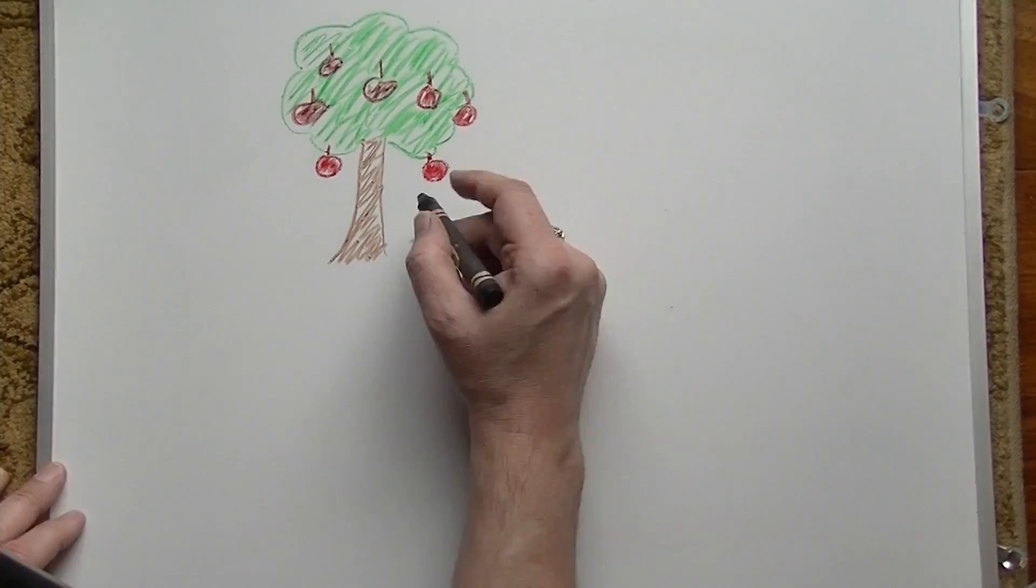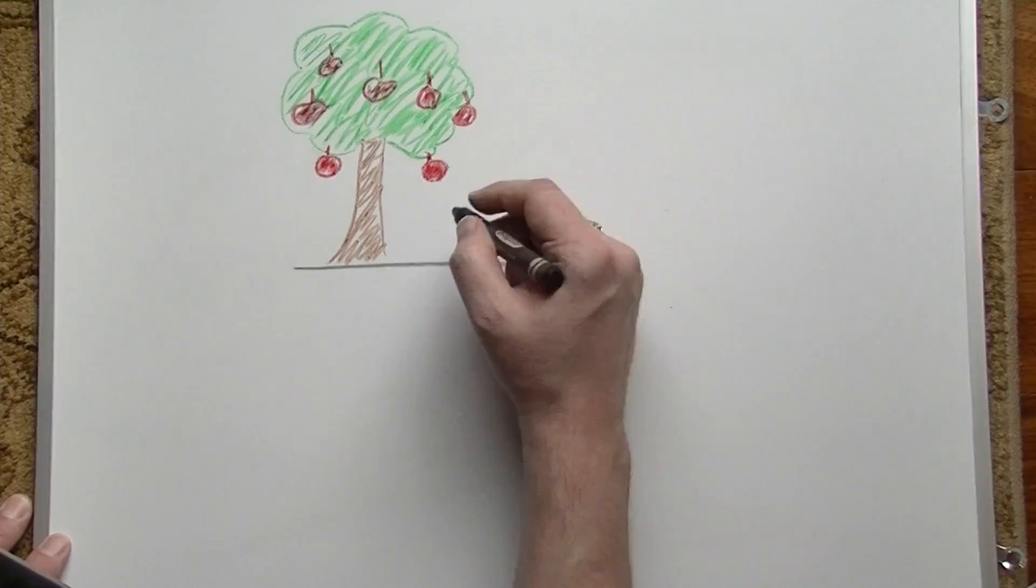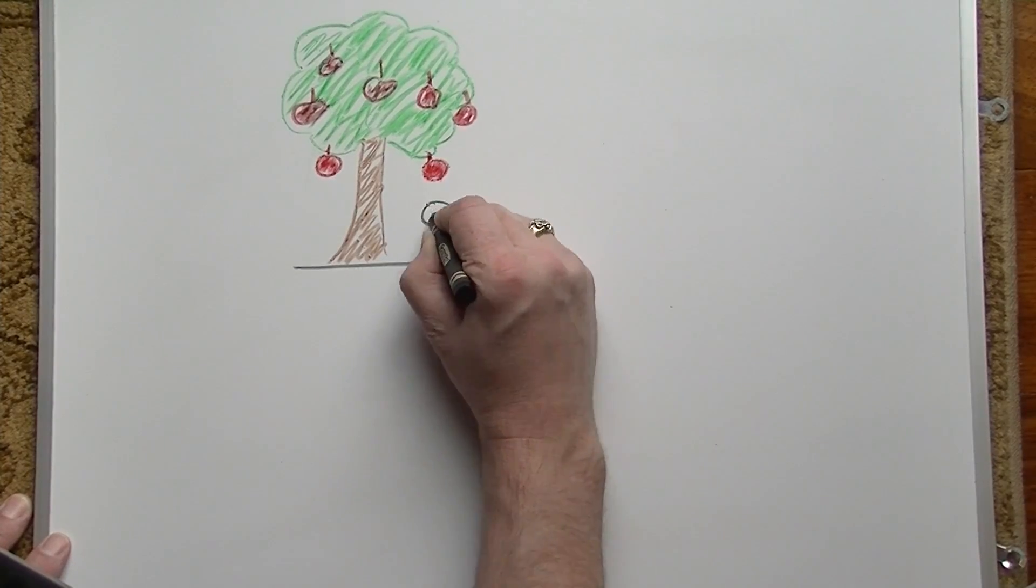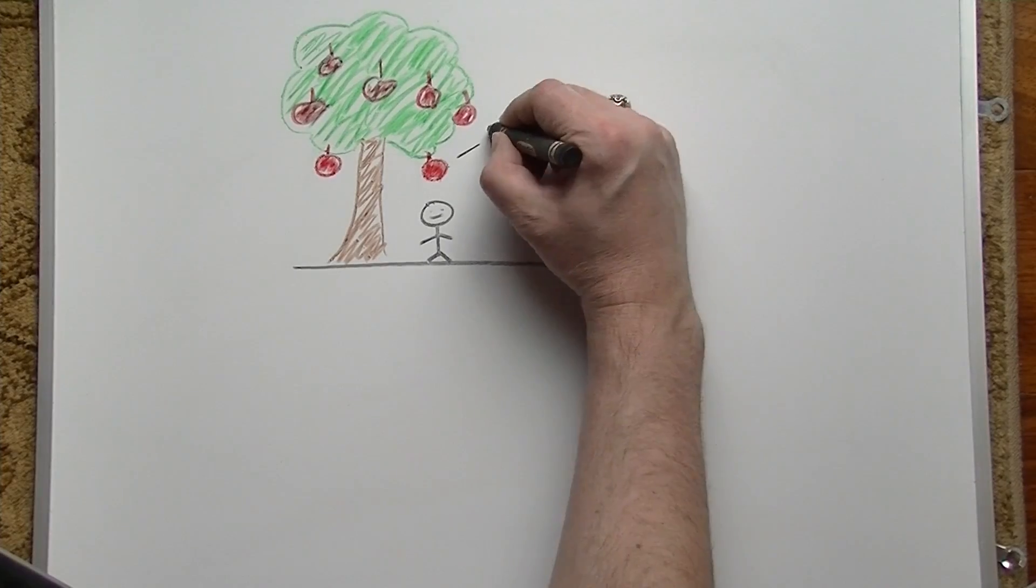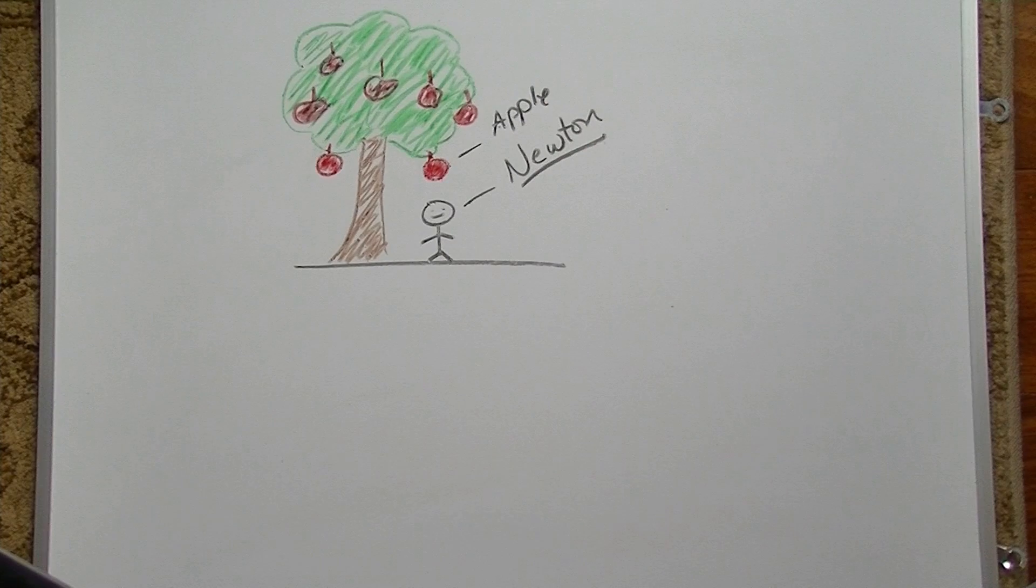Anyone who has taken a physics class might remember the concept of potential energy. This concept is probably most clearly represented by the apple hanging on the tree above the head of the unsuspecting Isaac Newton. The apple has a potential energy that is a function of its mass and its distance above Isaac's head.